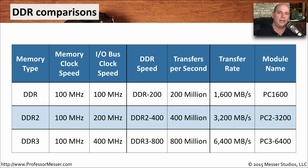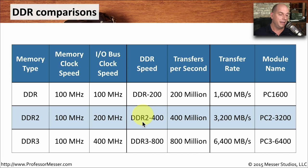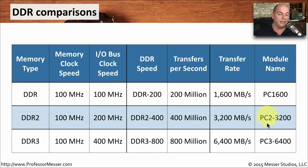Let's now look at DDR, DDR2, and DDR3 right next to each other. The examples shown all use the same memory clock speed of 100 megahertz, but notice that the I/O bus clock speed is identical with DDR, doubled for DDR2, and then doubled again for DDR3. So our 100 megahertz clock speed gives us DDR200, DDR2-400, and DDR3-800. With each of these numbers, we multiply by 8 to get the transfer rate used for the module name. So DDR memory is PC1600, DDR2 memory is PC2-3200, and DDR3 is described as PC3-6400.